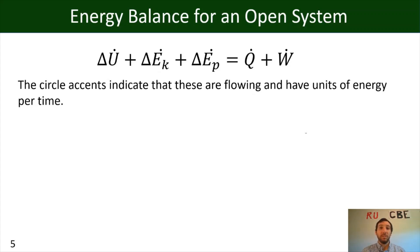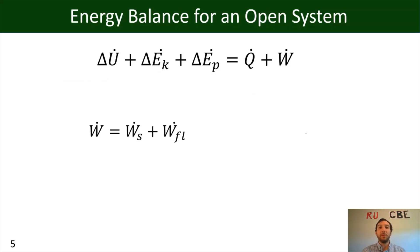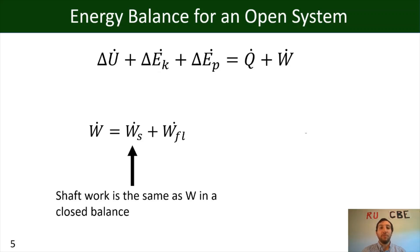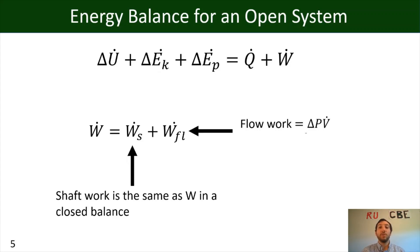Because we have mass in motion, we have to modify our work term. The work term is now defined as W_S plus W_FL, where W_S is our shaft work — the same work as in our closed system — which is the mechanical energy where a moving part is either inserting or dispensing energy. We now also have a new term for an open system: flow work, which equals ΔpV̇, meaning pressure times the volumetric flow rate.